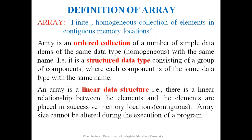An array is an ordered collection of data elements of the same data type with the same name. It can also be defined as a structured data type consisting of a group of elements of the same type with the same name. An array is a linear data structure where elements are stored one after the other in successive memory locations. Once the array size is declared at creation, it cannot be changed during execution.